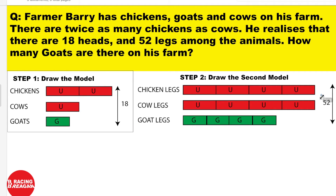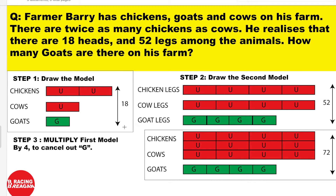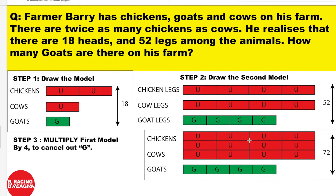For step 3, multiply the first model — the head model for chickens, cows, and goats — by 4. So 18 times 4 equals 72. That gives you 8 units for chickens and 4 units for cows. Since the head model had 1 goat unit, multiplying by 4 gives 4 goat head units. The reason we multiply by 4 is to match the 4 goat leg units in the leg model, so that when we subtract the two models, the goat units cancel out.